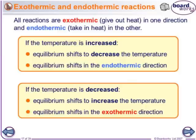All reactions that are exothermic in one direction have to be endothermic in the other direction. So if the temperature is increased, the equilibrium shifts to get rid of the temperature and will go in the endothermic direction. If you decrease the temperature, the temperature will be lower, and the reaction will shift in the exothermic direction to release energy into the system and warm it up again.